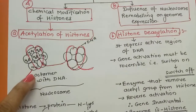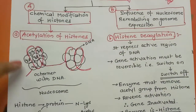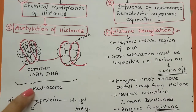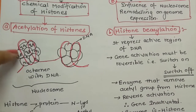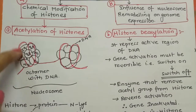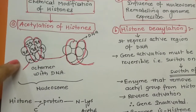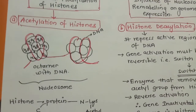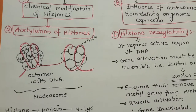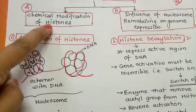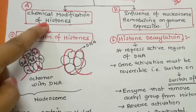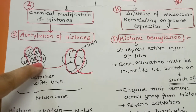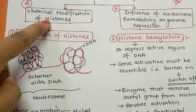Imagine eight balls as the octamer and our DNA is completely packed around it. This complete structure is called a nucleosome. This is the active form of DNA where our chromosome thread is wound over the octamer. Histone proteins maintain the DNA structure and integrity. As far as eukaryotes are concerned, if you want to activate or deactivate any gene or DNA, the role is played by histone proteins.